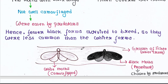White moths could hide in this since they were less prominent against the whiter background. Due to this advantage, white moths escaped from the predator's eyes. But as you can see, black moths were very much prominent against this whiter background.